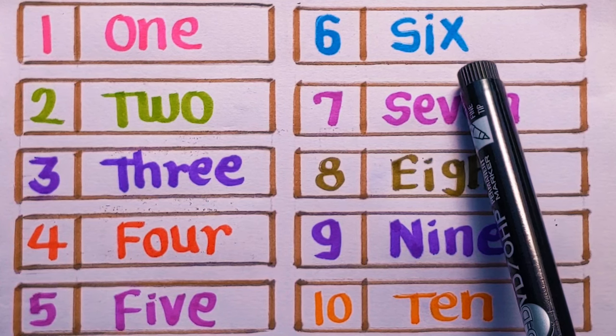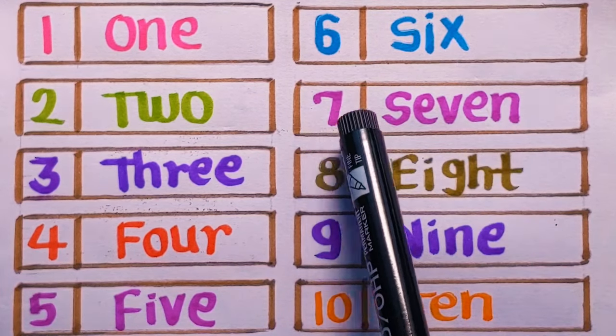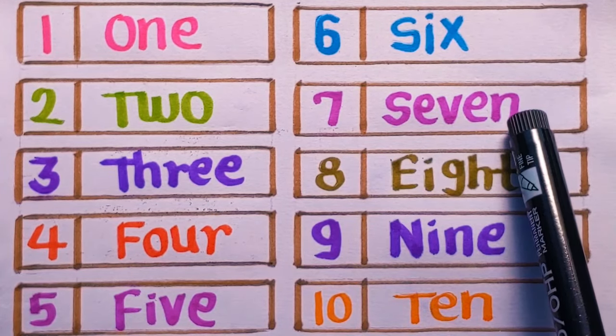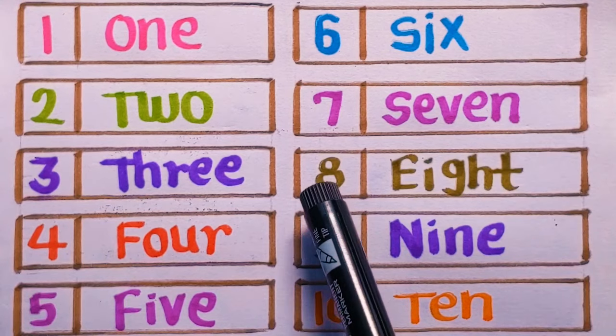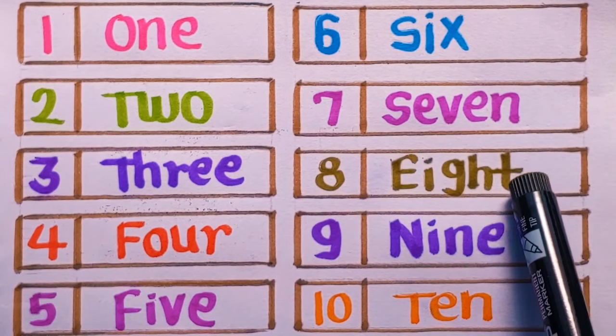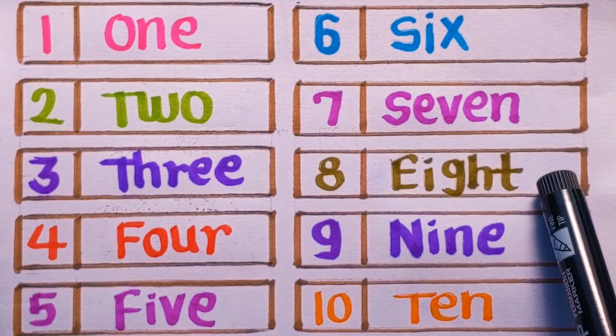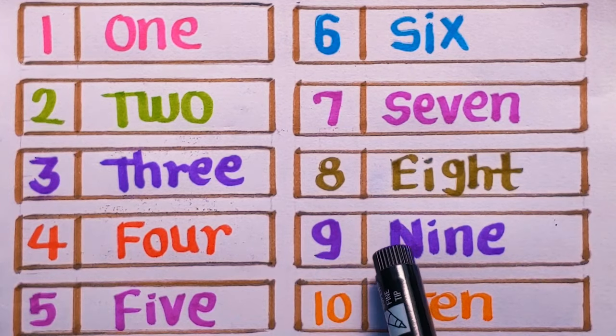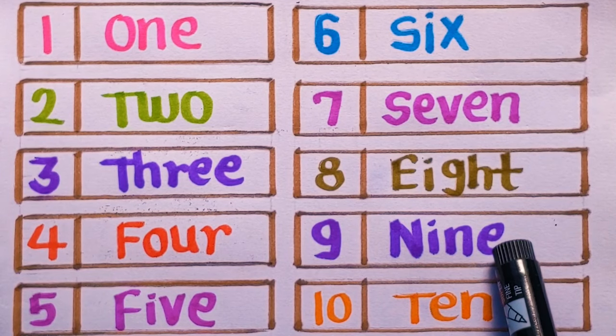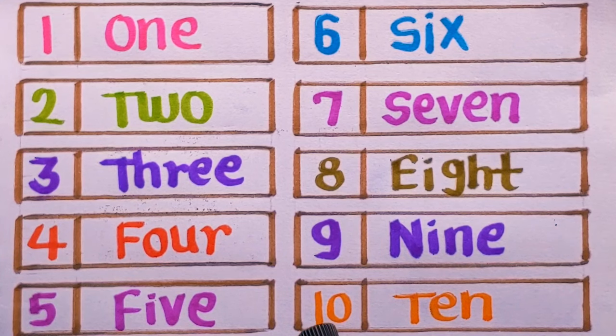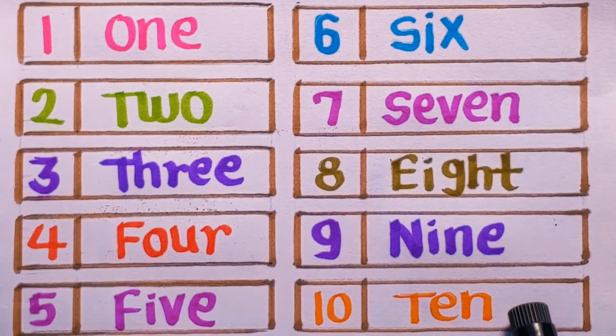six, sky blue color. Seven: S-E-V-E-N, seven, purple color. Eight: E-I-G-H-T, eight, olive green color. Number nine: N-I-N-E, nine, violet color. And ten, 1-0: T-E-N,